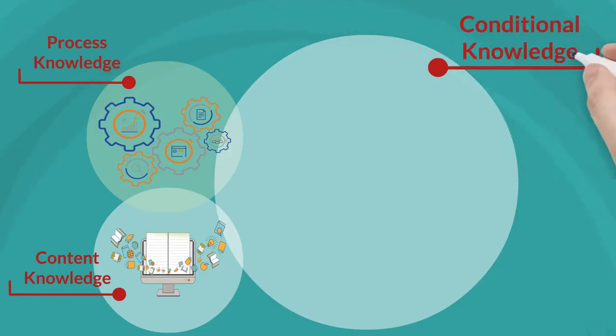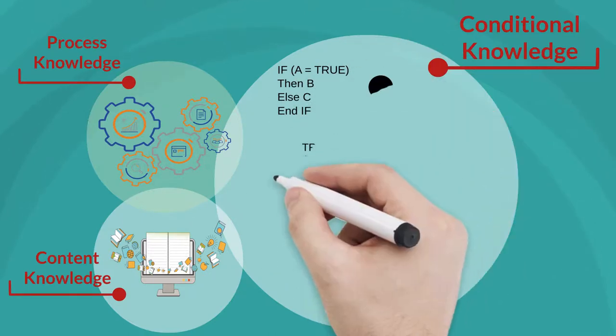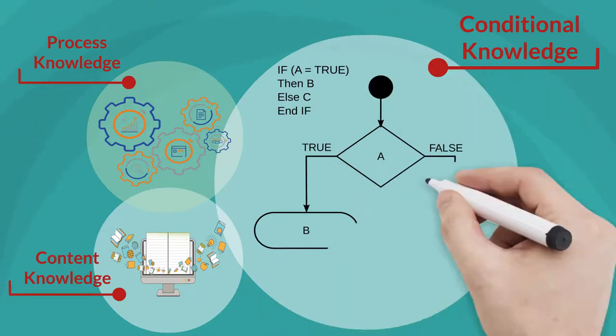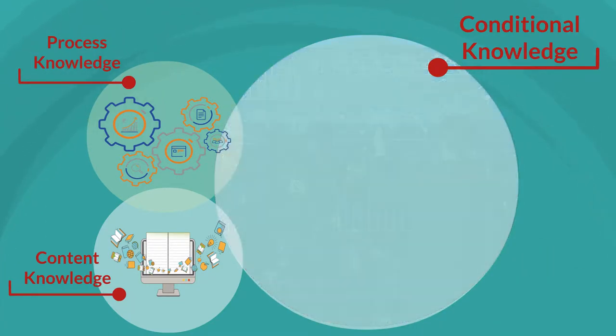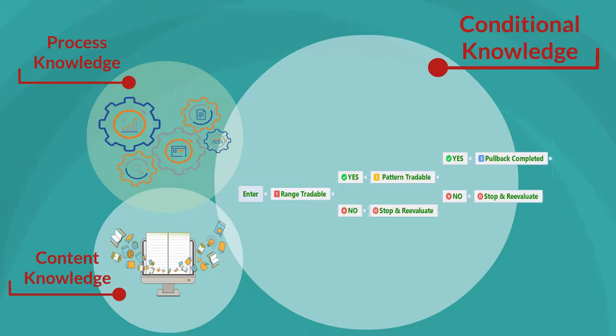The third domain is conditional knowledge which is about when to use and when not to use a procedure, step, or strategy. It also explains why a procedure works under certain conditions and why it may work better than another. Conditional knowledge is used extensively in many types of trading and is defined in a trader's trading plan.